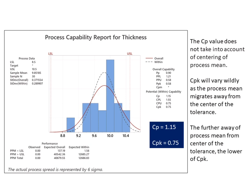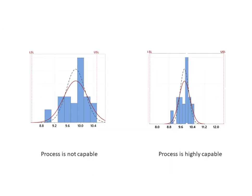The CP value does not take into account the centering of the process mean. CPK will vary wildly as the process mean migrates away from the center of the tolerance — the further the process mean from the center of the tolerance, the lower the CPK. In this case, CP is 1.15 but CPK is 0.75 due to the process mean being shifted toward the upper spec limit. The graph on the left is not a capable process, while the graph on the right is a capable process.